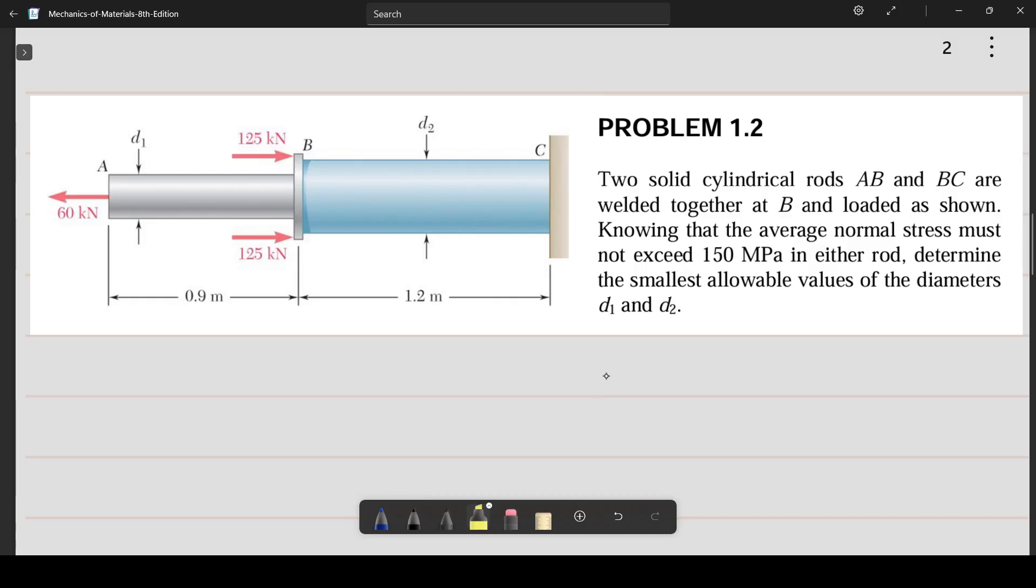Let's read the question. Two solid cylindrical rods AB and BC are welded together at B and loaded as shown. Knowing that the average normal stress must not exceed 150 MPa in either rod, determine the smallest allowable value of diameters d1 and d2.